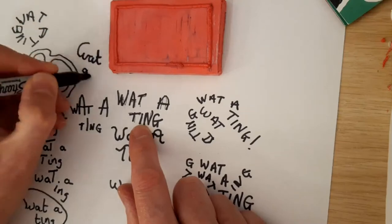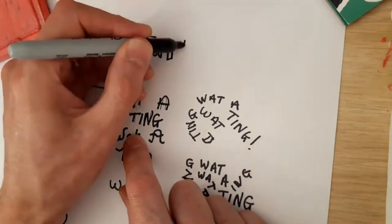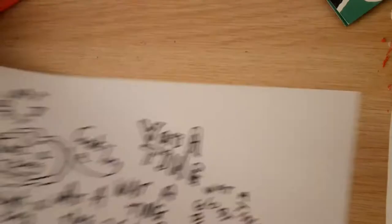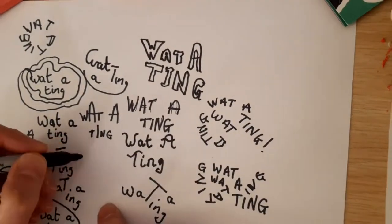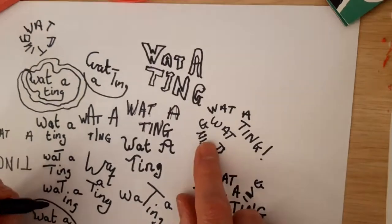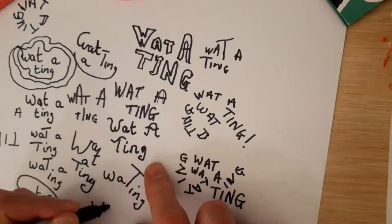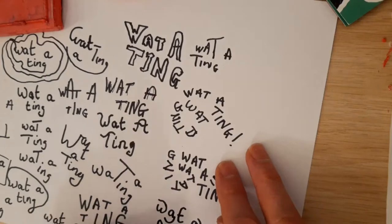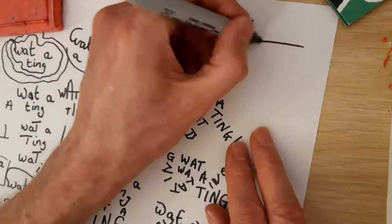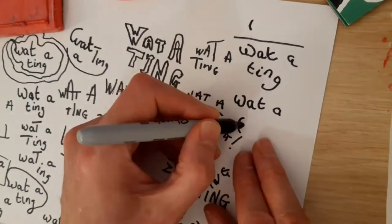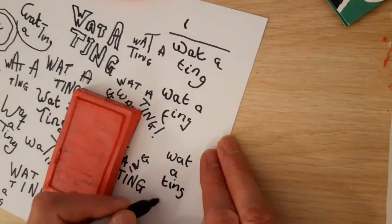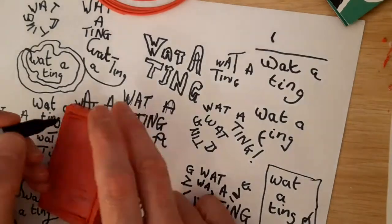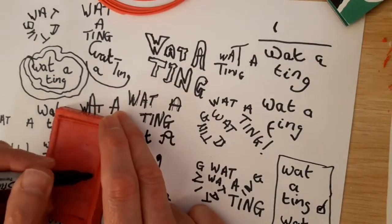As you can see, I was really struggling to try and work out how to fit the writing onto the plate. It turns out that this rectangular shape just doesn't really work. So here I've gone for something that looks a bit like a checklist. What a ting, what a ting.